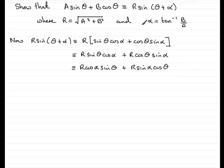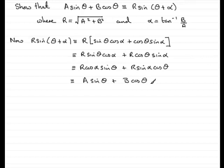Now, r and α are constants, so r cos α is a constant. I can call that constant a, so I have a sin θ. Similarly, r sin α will also be a constant, and I'm going to call that constant b, giving us b cos θ. So what we've got here is essentially what we had at the start — I've been able to prove that r sin(θ + α) is identical to a sin θ + b cos θ, where a and b are constants.